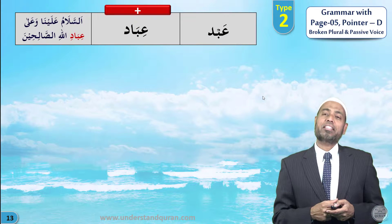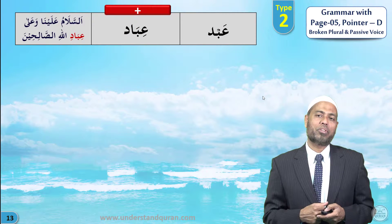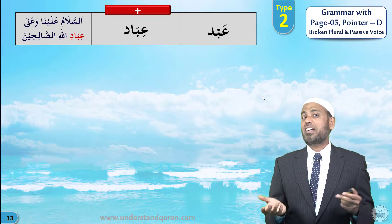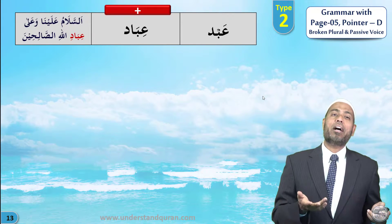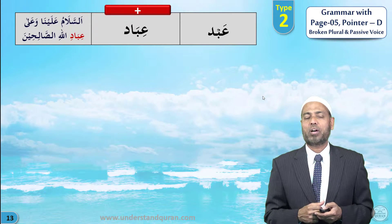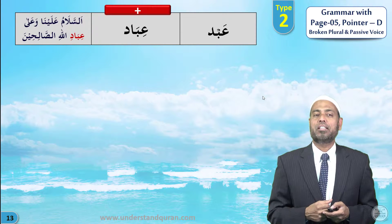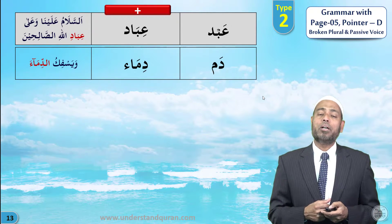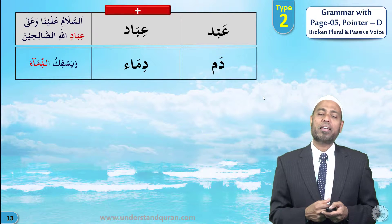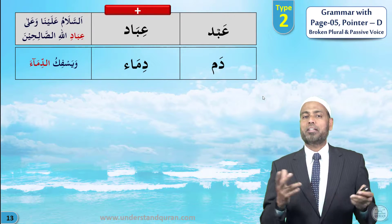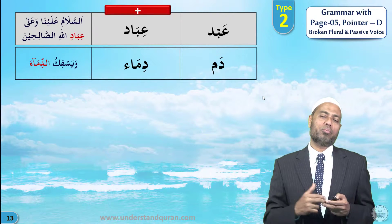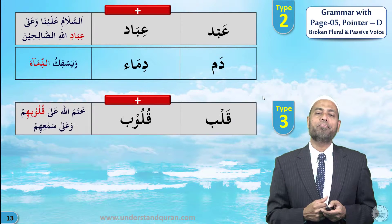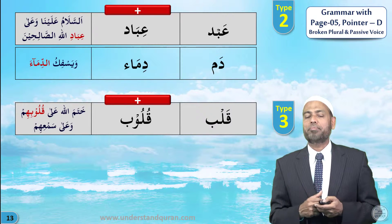Now let us take the second type of broken plurals. 'Abd — the plural is not 'ubud, it is 'ibad — as-salamu 'alayna wa 'ala 'ibadillah, the slaves of Allah. Dam means blood; plural is dima' — wa yasfikud-dima', and they will shed blood. There is no plural of blood in English, but dima' means bloods.